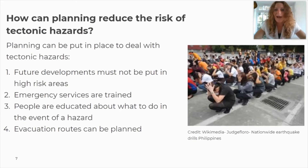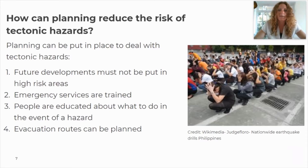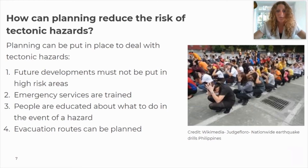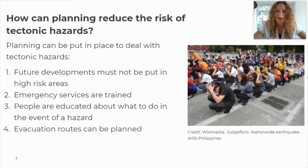We've looked at protection; now let's look at planning. How can planning reduce the risk of tectonic hazards? There are lots of ways governments and people can plan, and here are the four most important. First: future developments must not be put in high-risk areas. In Christchurch, New Zealand, after a 2010 earthquake, they decided not to allow any more building in areas that might suffer an earthquake. They moved the entire city centre off the fault line.